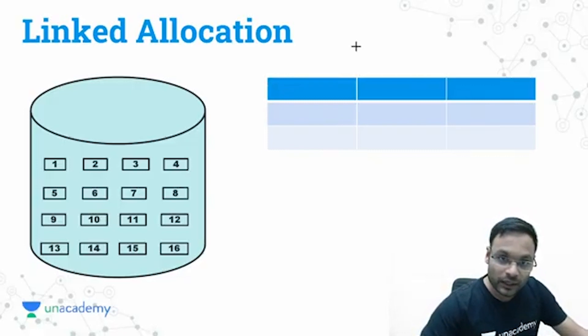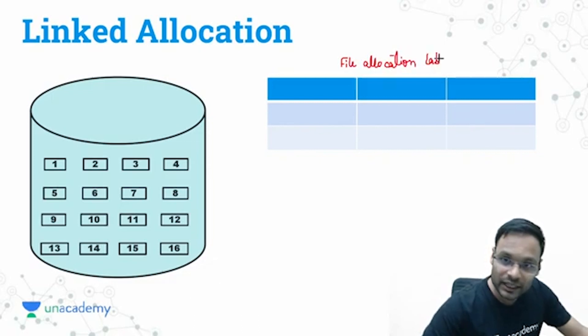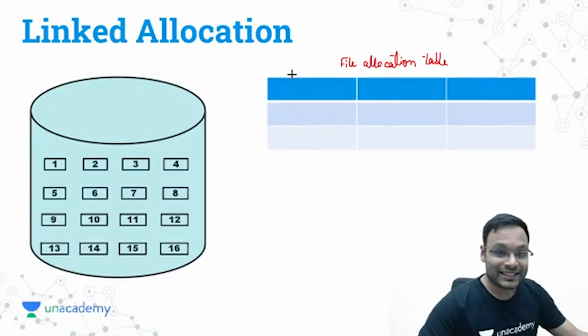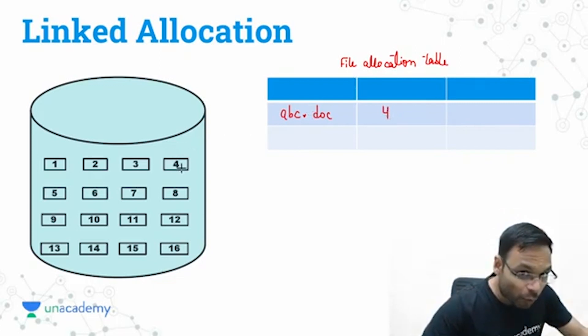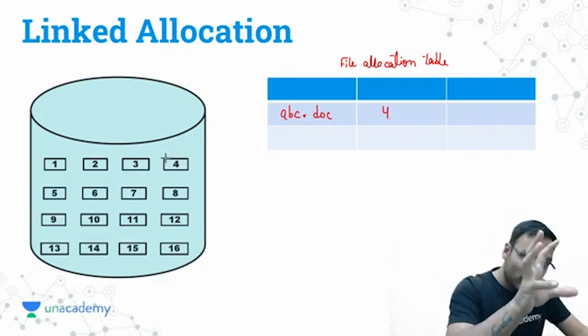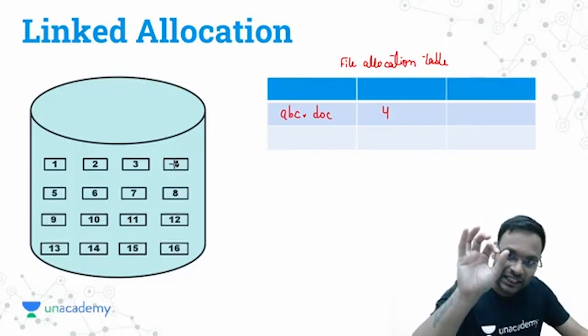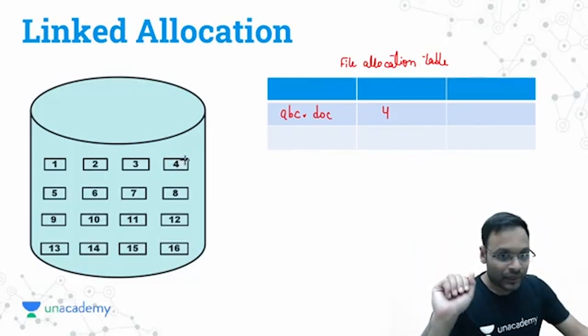First of all, of course we will be having a file allocation table here, but that file allocation table will be having different type of information this time. Let's say I do have a file, file name is abc.doc. That particular file is starting from block number four, but in the block number four what we will keep?